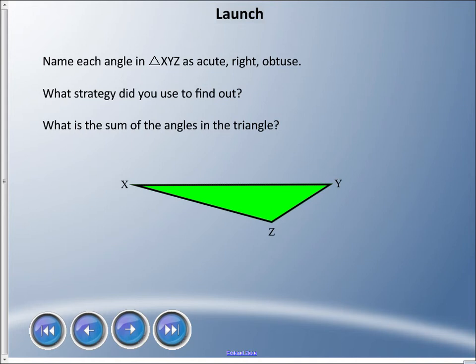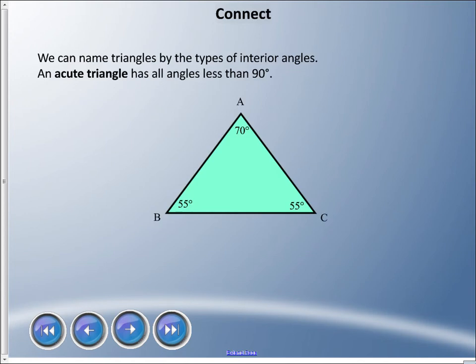We spent some time the last lesson looking at attributes, classifying triangles by certain attributes that we can observe. This time we're going to do a little bit of that, but we're going to focus only on angles today.